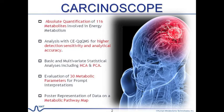There are five features in the Carcinoscope Metabolome Analysis Service Package. First, Carcinoscope provides absolute concentrations of 160 metabolites involved in the primary energy metabolism. Second, not only does Carcinoscope report absolute concentrations of 160 metabolites, but it also evaluates 30 metabolic parameters for facilitating data interpretations.